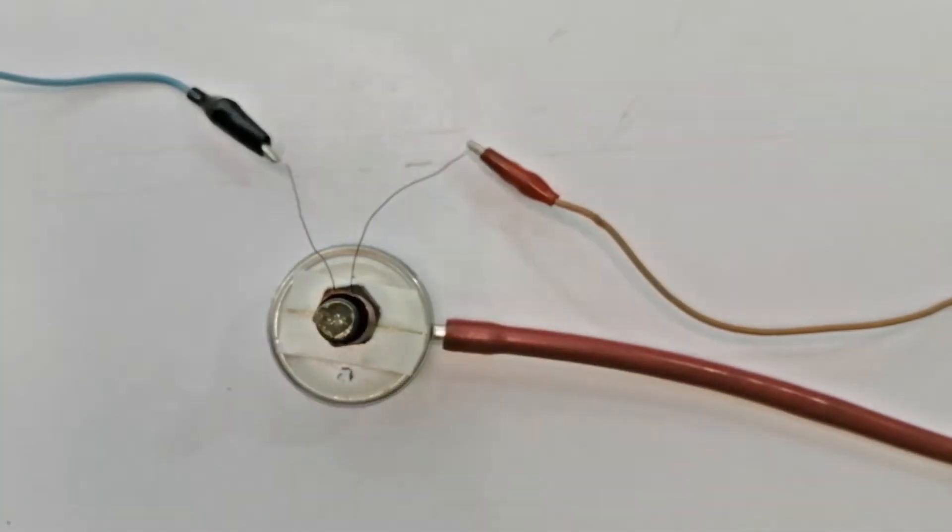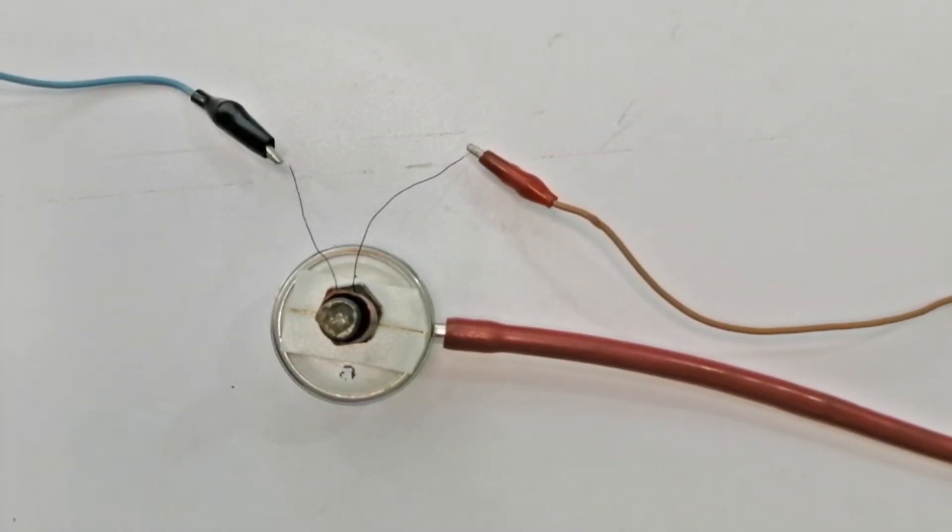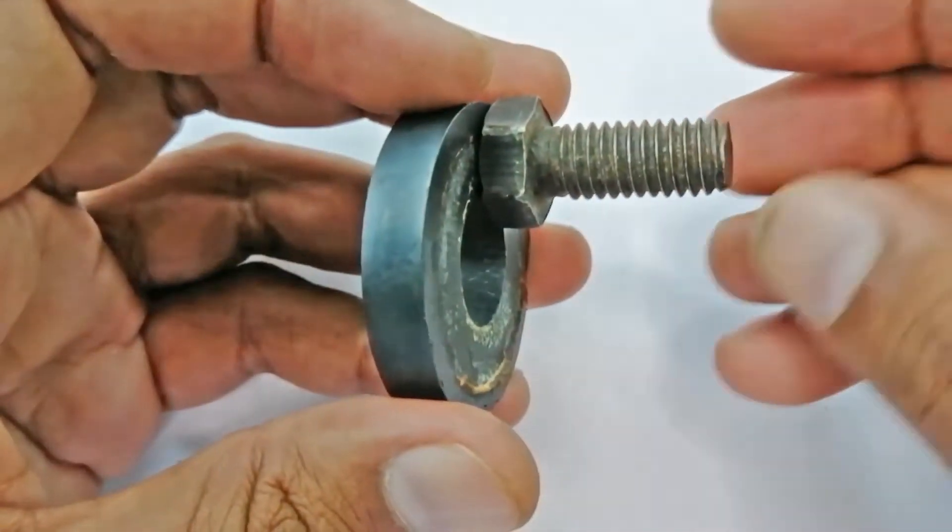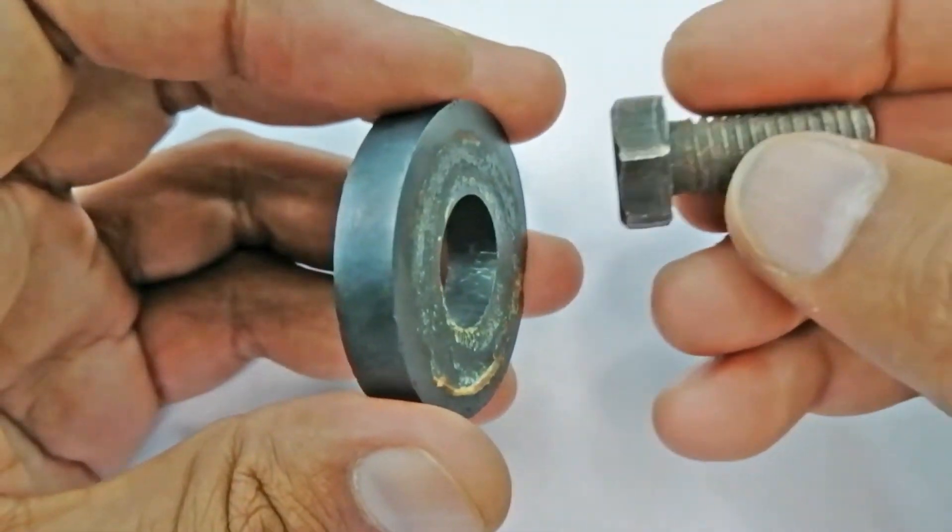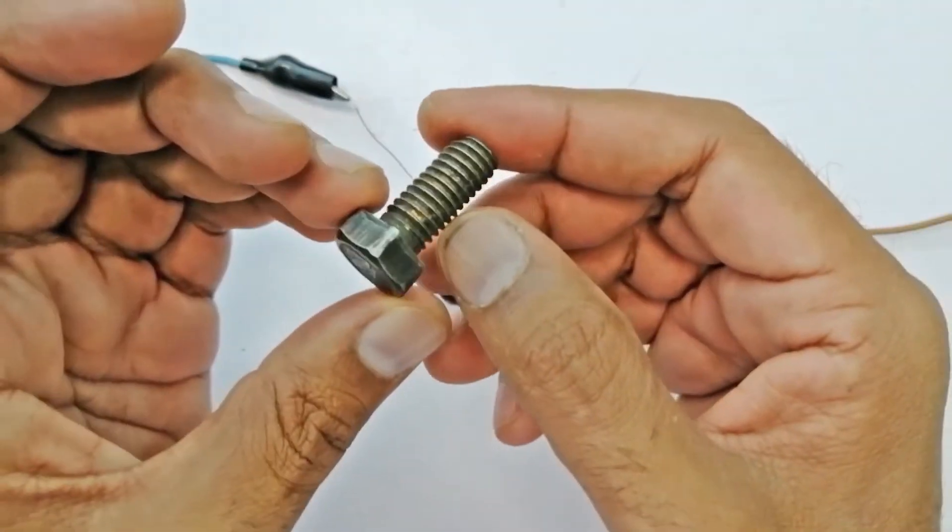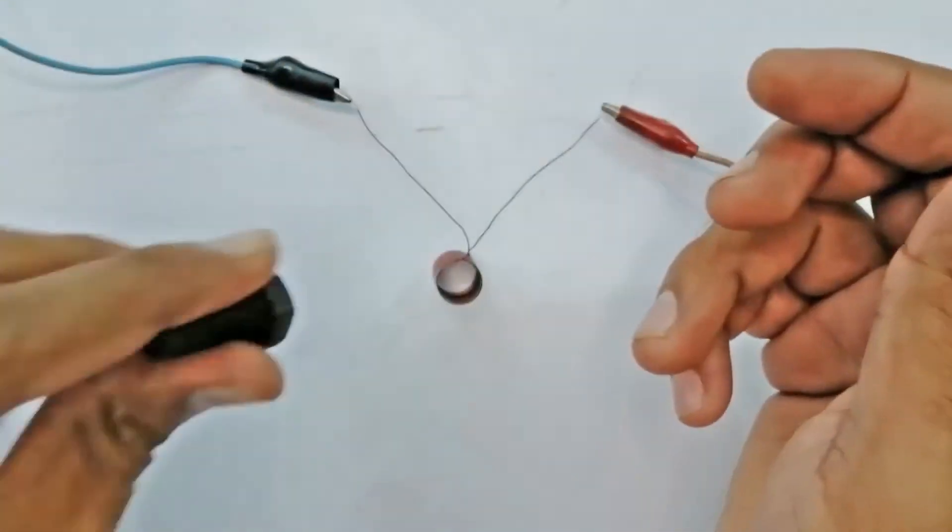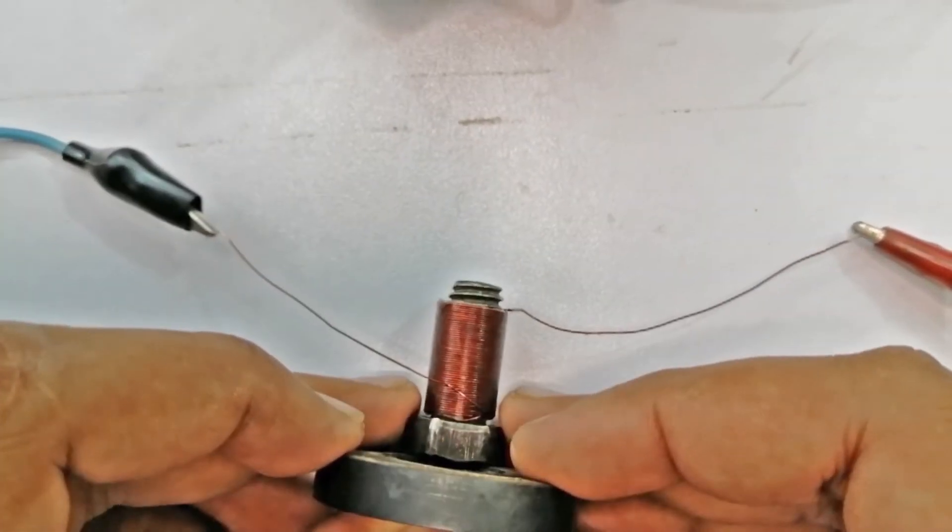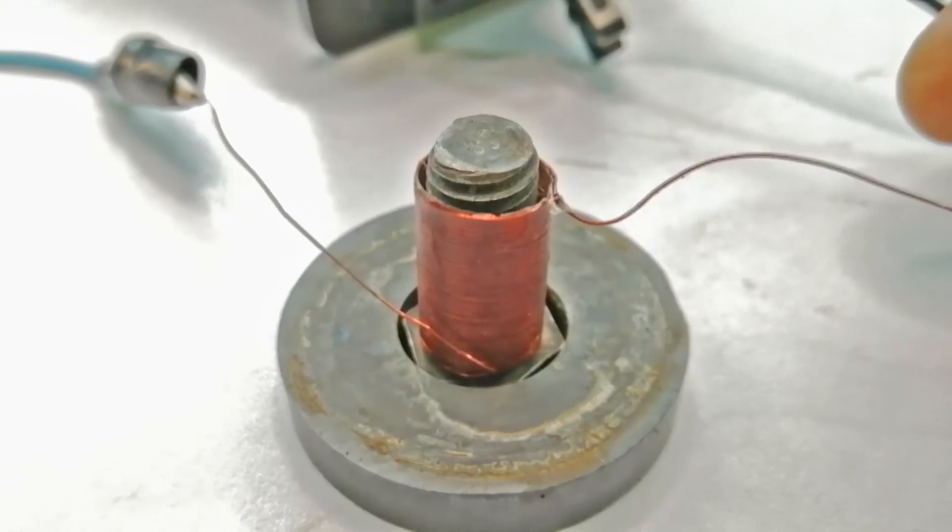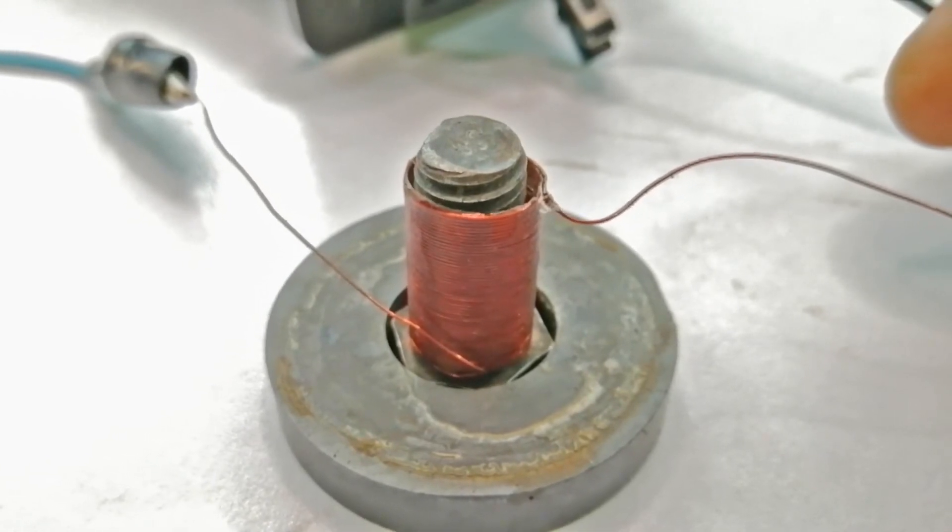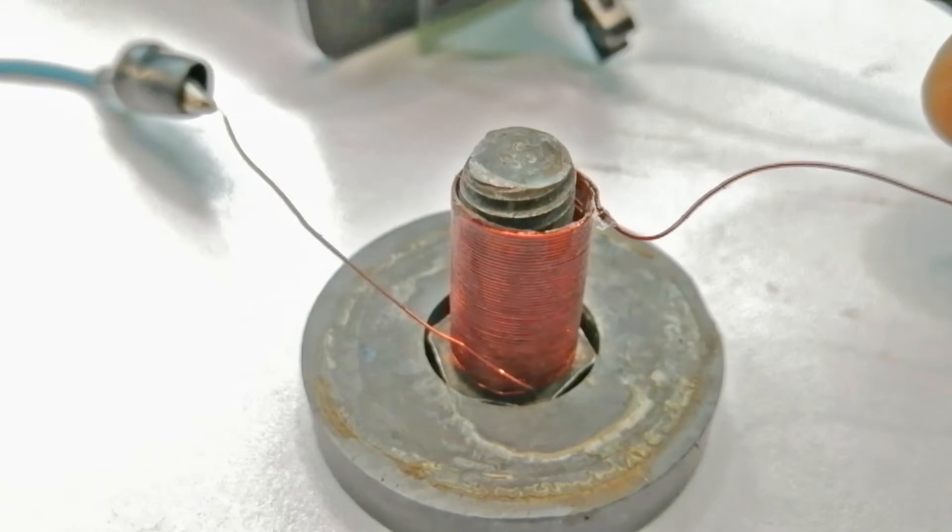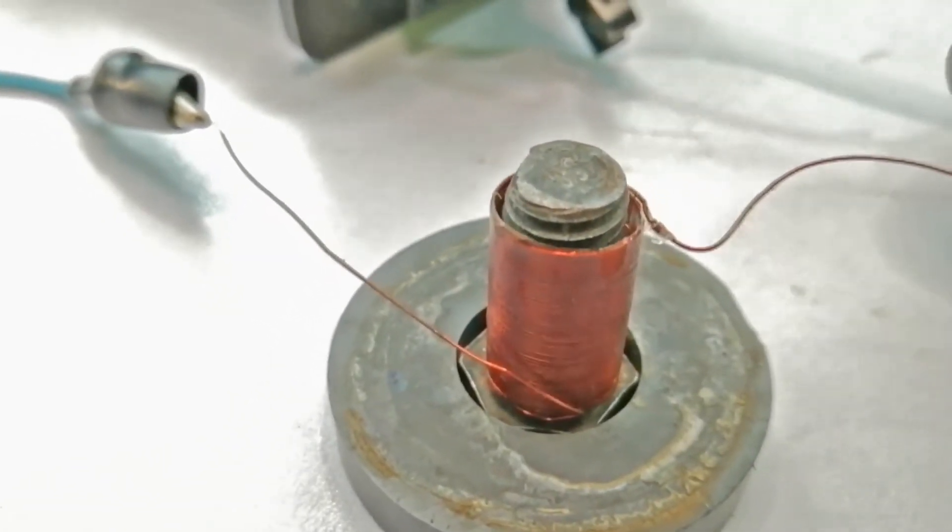Let's make the second change to improve this system. Now look, I have something different in my hand. This is a magnet in my hand. Let's take this magnet to the coil and attach it to the iron rod. Let's see what changes. Now the sound is so loud and we can hear it clearly without any help.